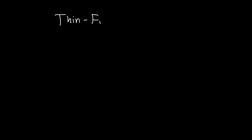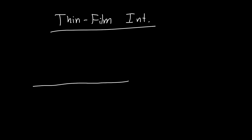In this video we're going to talk about thin film interference, which you've probably been introduced to in high school physics or a college physics course. Briefly restated: we've got some bulk material with refractive index n2 and some thin film with refractive index n1, and this thickness might be on the order of nanometers to microns.